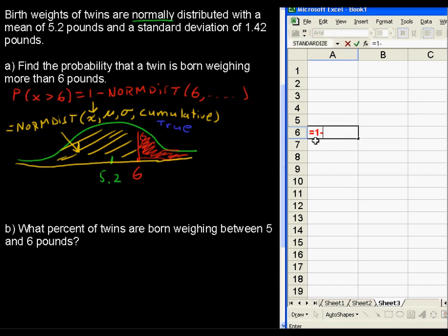So, equals 1 minus normdist of, and by the way, if you didn't remember how this is spelled, when you go to do this again, you can always go to the insert function, it works the same way on every version of Excel.